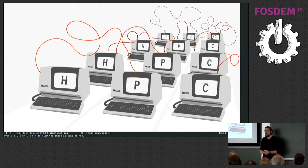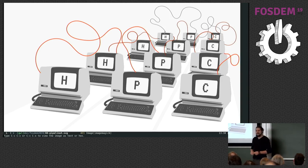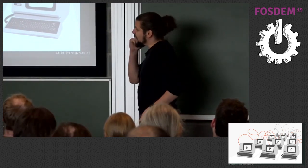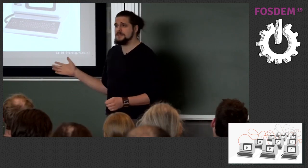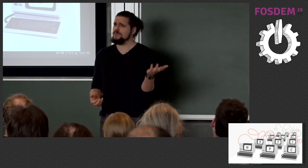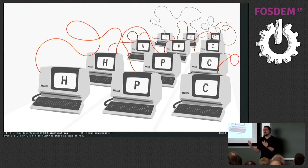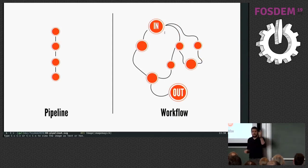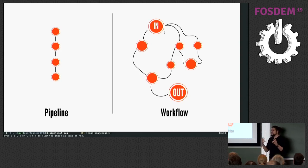High performance computing is really just lots of low performance computing but connected. An obvious problem with this is that these are different machines — you can't just use a pipe for that. You still have processes but how do you connect them? A pipeline is just a process connected with another process, but the concept of a workflow is an expansion of the idea of a pipeline.